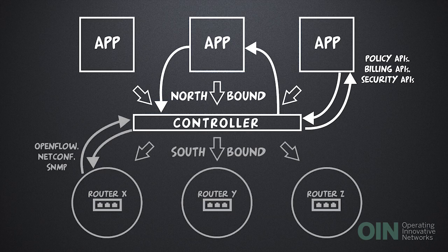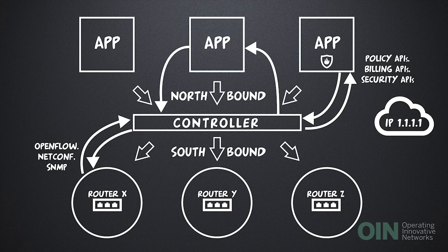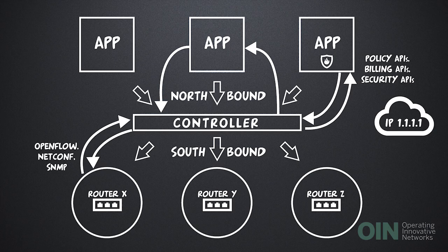What does this look like in practice? Let's use a simplified example. Imagine that there is a security application responsible for keeping certain malicious traffic from entering the network. This app has detected that a particular device with IP address 1.1.1.1 should be prevented from accessing the network. The security app will make a request of the controller on its Northbound API to block IP 1.1.1.1 from entering the network. The controller will then use its understanding of the network state to translate this request into specific rules for relevant devices, and communicate that using the Southbound API.